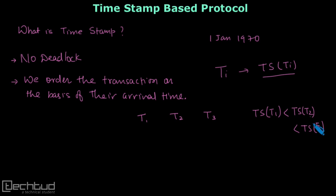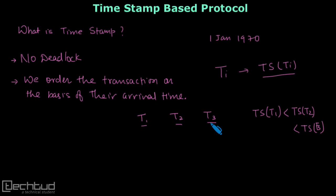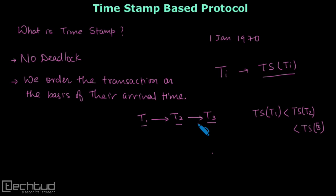Since timestamps keep on increasing, the transaction which comes first will have a lesser timestamp value. So if transactions T1, T2, T3 arrive in that order and we create a serializable schedule, it must be equivalent to the serial schedule T1, T2, T3.